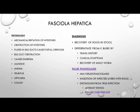Fasciola hepatica can cause mechanical irritation in the intestines from its migratory pattern, obstruction of the intestine, and flux in the bile ducts can cause portal cirrhosis. It can also cause bile obstruction, diarrhea, jaundice, anemia, pruritus, urticaria, and cough. Diagnosis is through recovery of eggs in the stool and can be differentiated from Fasciolopsis buski through travel history, clinical symptoms, or recovery of the adult worm, which is smaller for Fasciola hepatica.